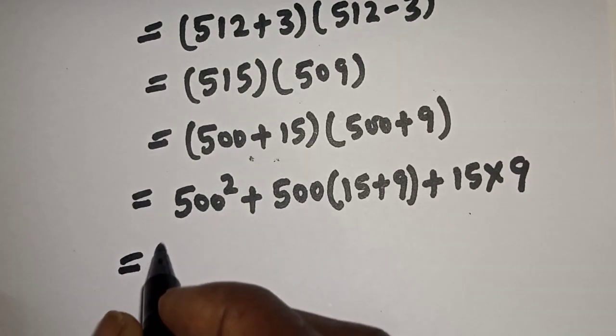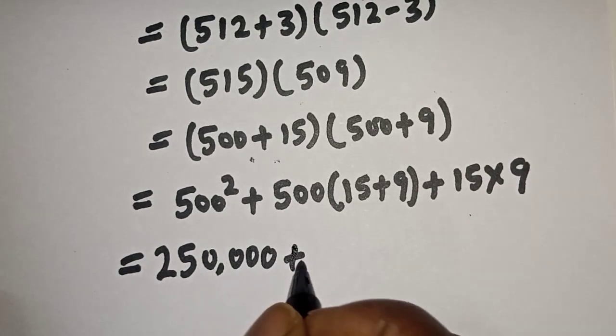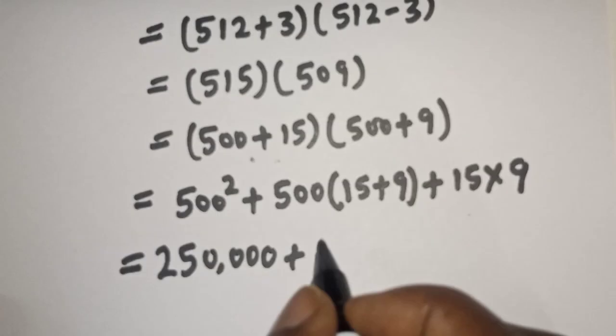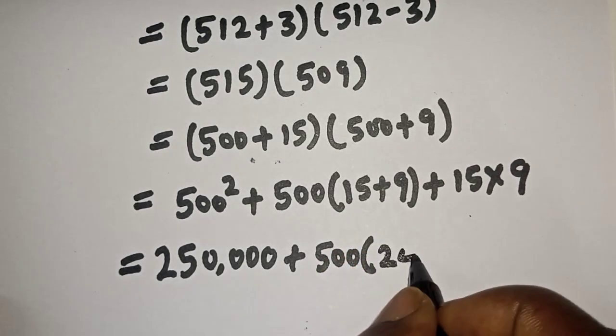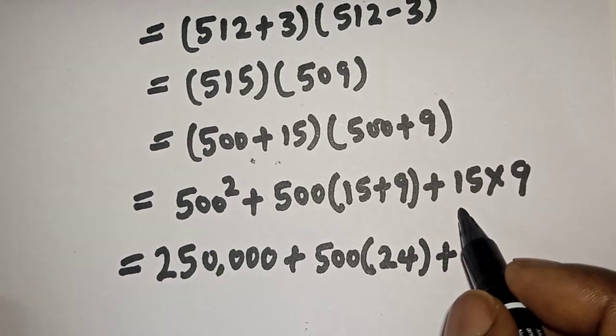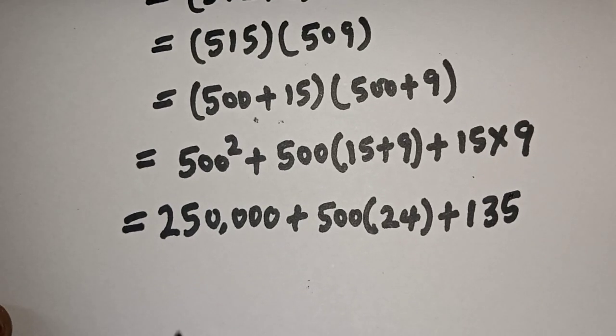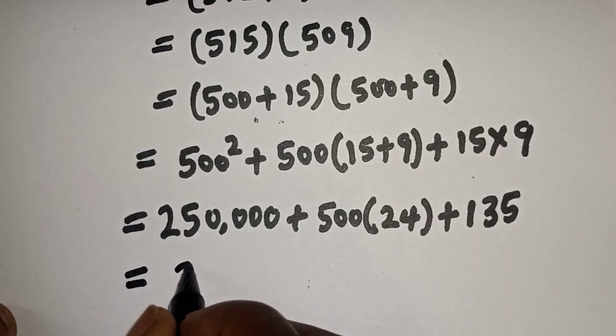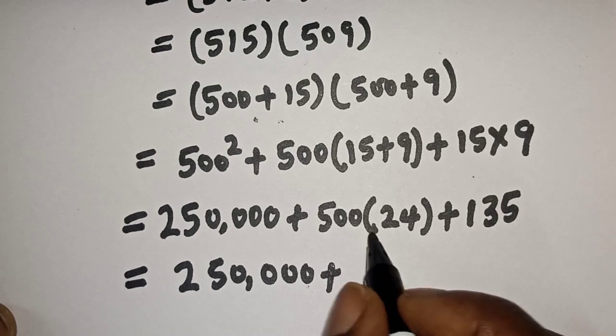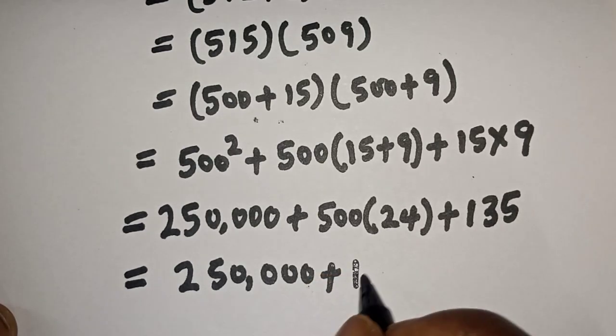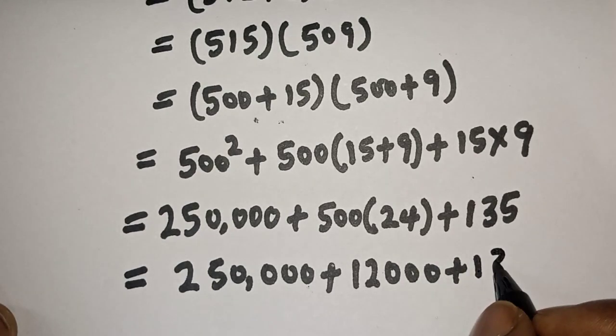This is equal to 500 square is 250,000, plus 500 bracket 15 plus 9, that is 24, plus 15 times 9, 135. And this is equal to 250,000 plus 500 times 24, that is 12,000, plus 135.